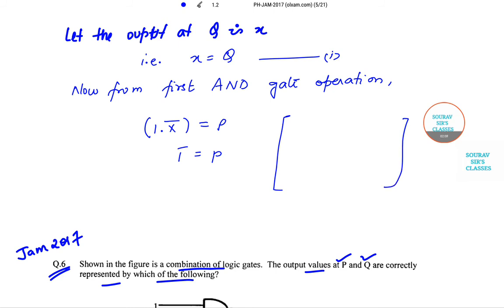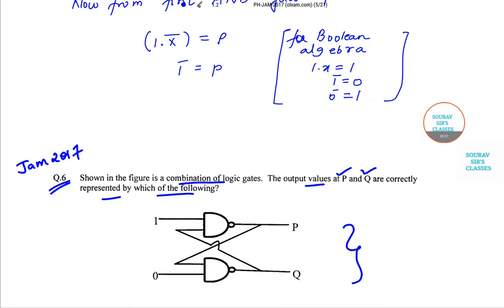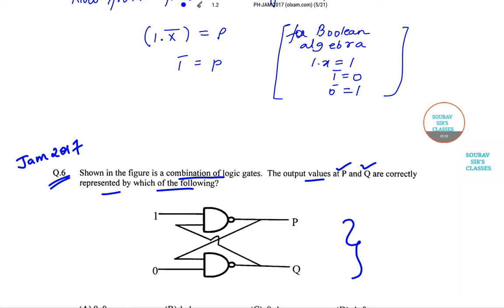Now let me tell you a little bit about Boolean algebra. For Boolean algebra: 1·1 = 1, 1·0 = 0, 0·1 = 0, 0·0 = 1. 0 = P is our second equation.